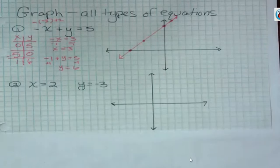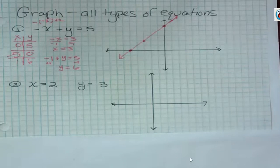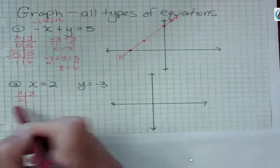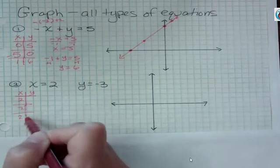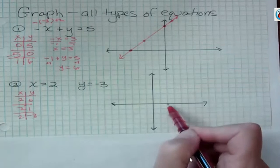Okay, what about these two types, x equals 2 and y equals negative 3? We've done a bunch of these, so I'm just going to go through this very quickly. If x equals 2, then x is always 2, regardless of what y is. So if x is 2, y could be 0.